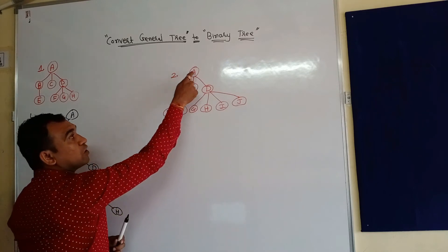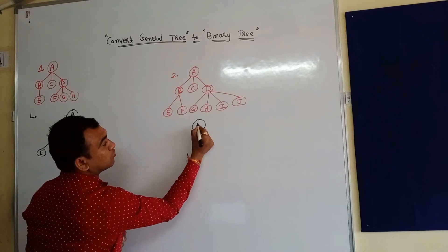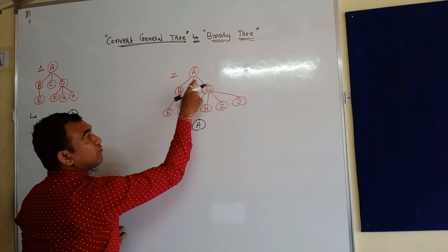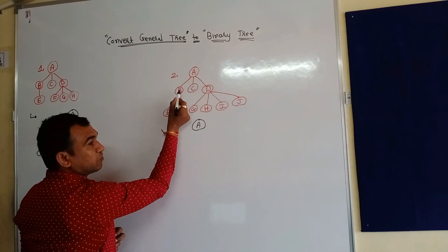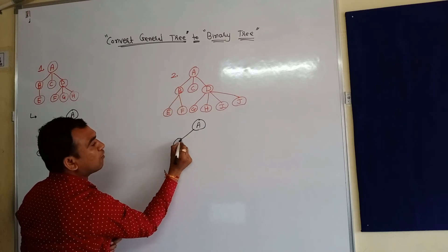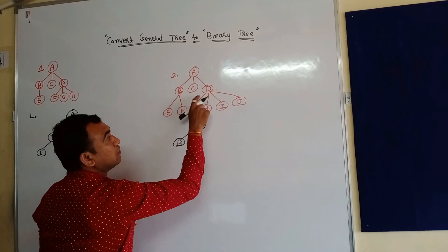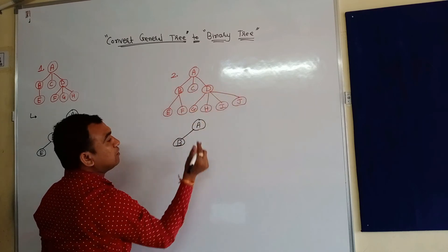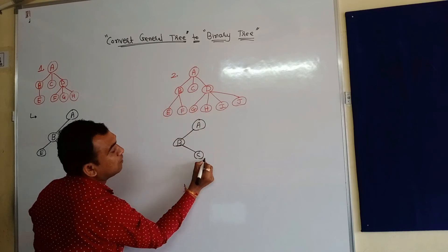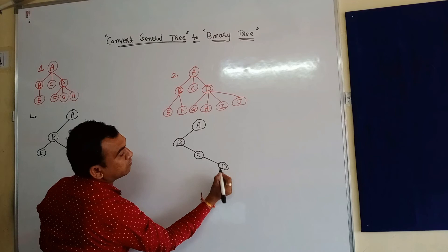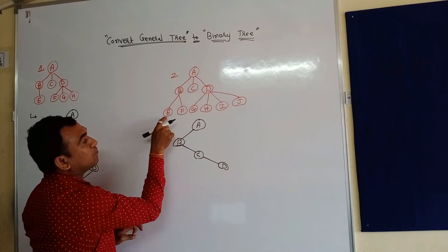Let's take one more example of converting a general tree into a binary tree. The root node A remains the root. From A's children, the left-most child B will be the left node of the root. The remaining children become right nodes of each other: B's right is C, and C's right is D.